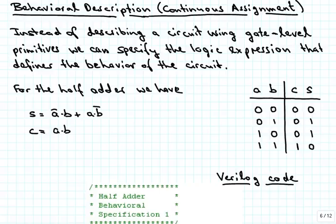If we were limited to just using the structural description, we would not really gain that much with using computer aided design tools. Because it is still the cumbersome way of breaking everything up into gates and then wiring those gates, doing perhaps some minimization in terms of minimizing the number of gates or number of inputs. What actually really makes hardware description language useful is if you can go to higher levels of abstraction, and the behavioral kind of description brings us to such a higher level of abstraction. Instead of describing a circuit using the gate level primitives, we now can specify logic expressions that define the behavior of the circuit.